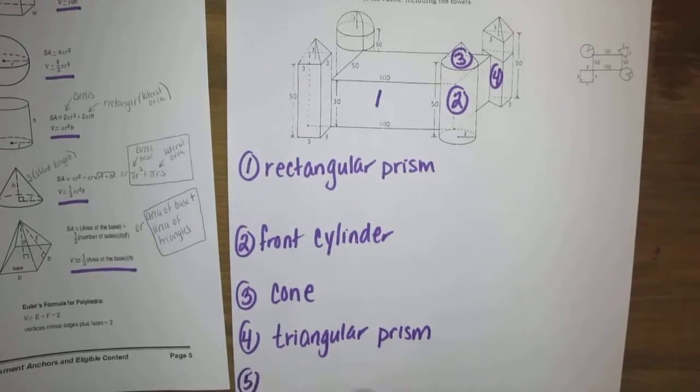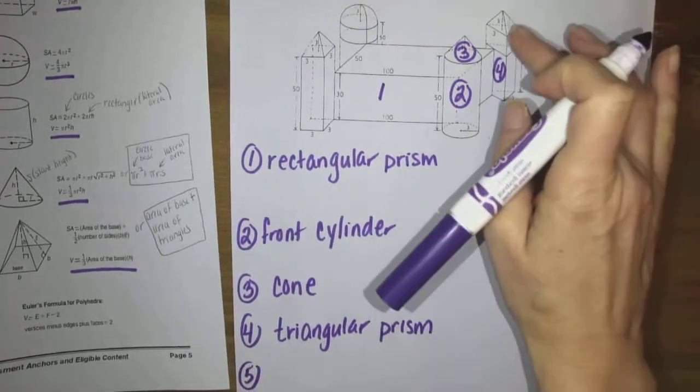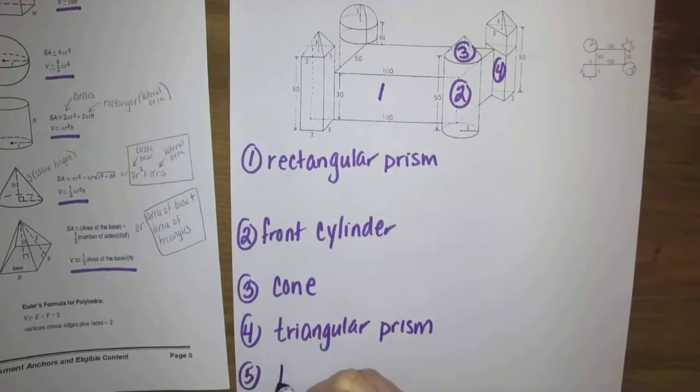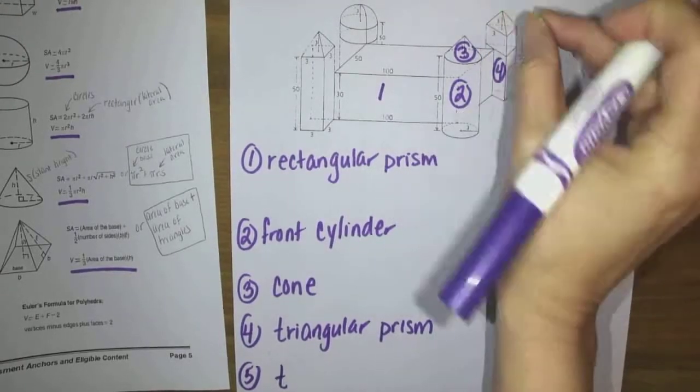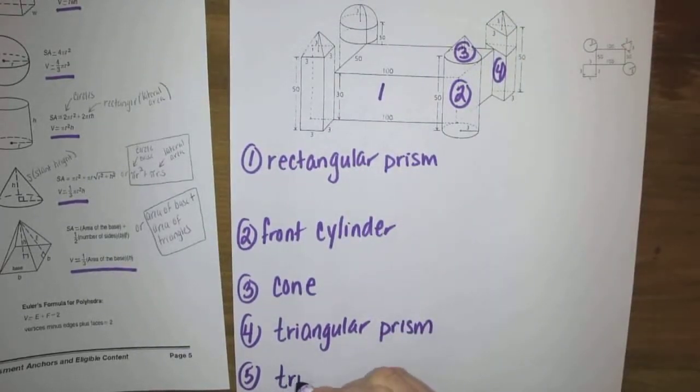Number five, on top of that, would be a triangular pyramid. Goes to a point, its base is a triangle, so we call it a triangular pyramid.